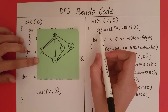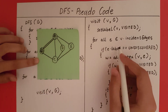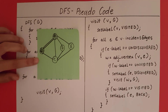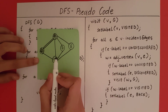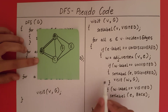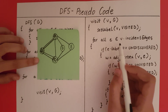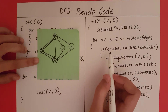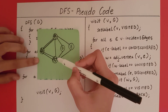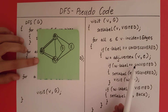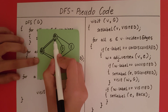Now we visit B. We set the label of B to visited. We go through its incident edges; we find an undiscovered edge. W becomes the adjacent vertex C. C is unvisited, so we set the edge to discovered and call visit(C, G). We set the label of C to visited. Going through C's incident edges, we find an undiscovered edge. W is A. Is A unvisited? No, A is visited. So we set that edge as a back edge.